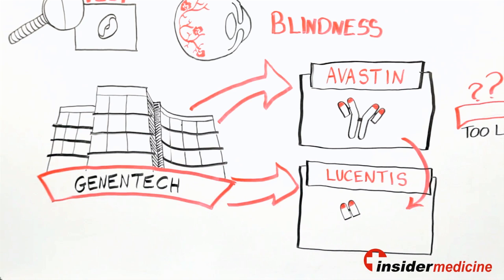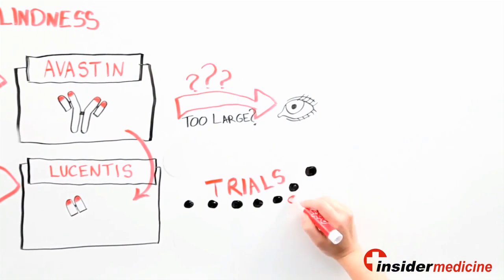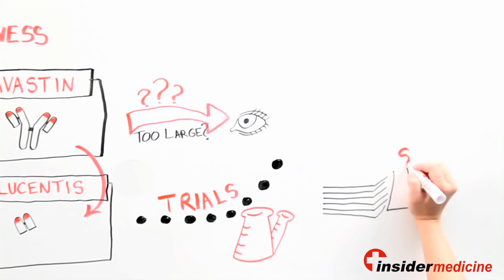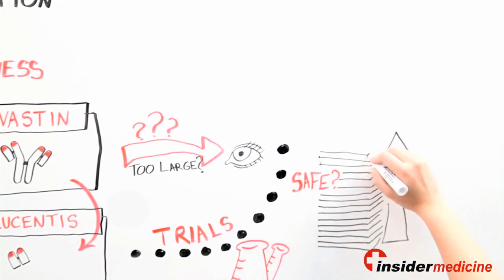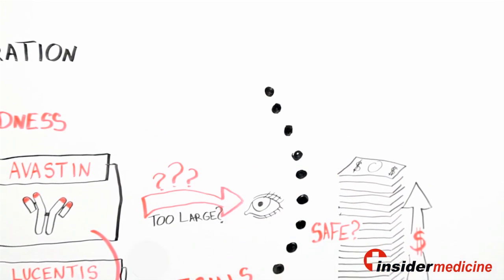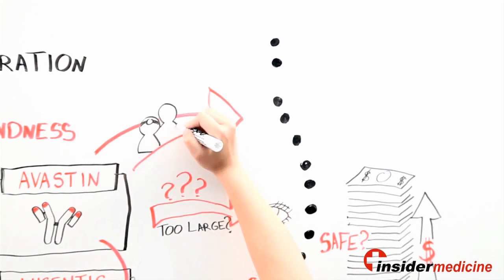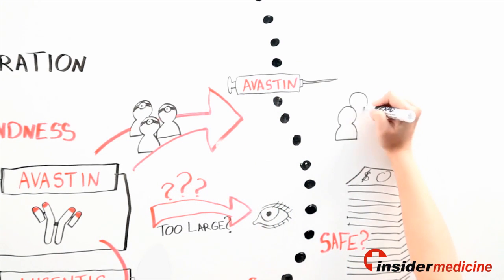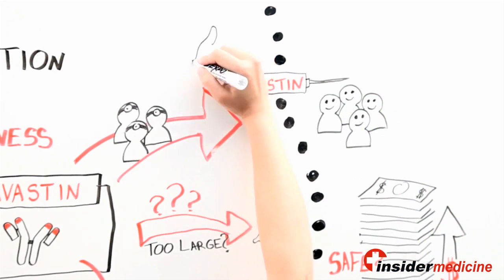When Lucentis was developed, Genentech immediately began the long process of conducting clinical trials to get it approved for macular degeneration. This process takes many years and many different study types and can cost over a billion dollars. But because our patients were going blind as we waited for the results of Lucentis, some eye surgeons started using Avastin through injection into the eye, even though it wasn't approved for macular degeneration. And the results were very promising.